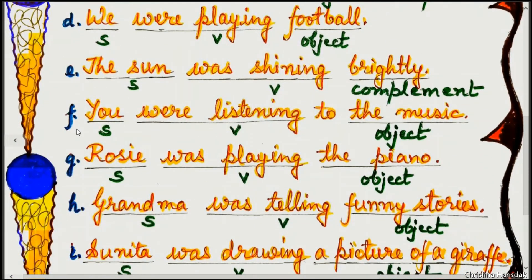Example F: You were listening to the music. 'You' is the subject, 'were listening' is the verb with additional -ing, and 'the music' is the object.